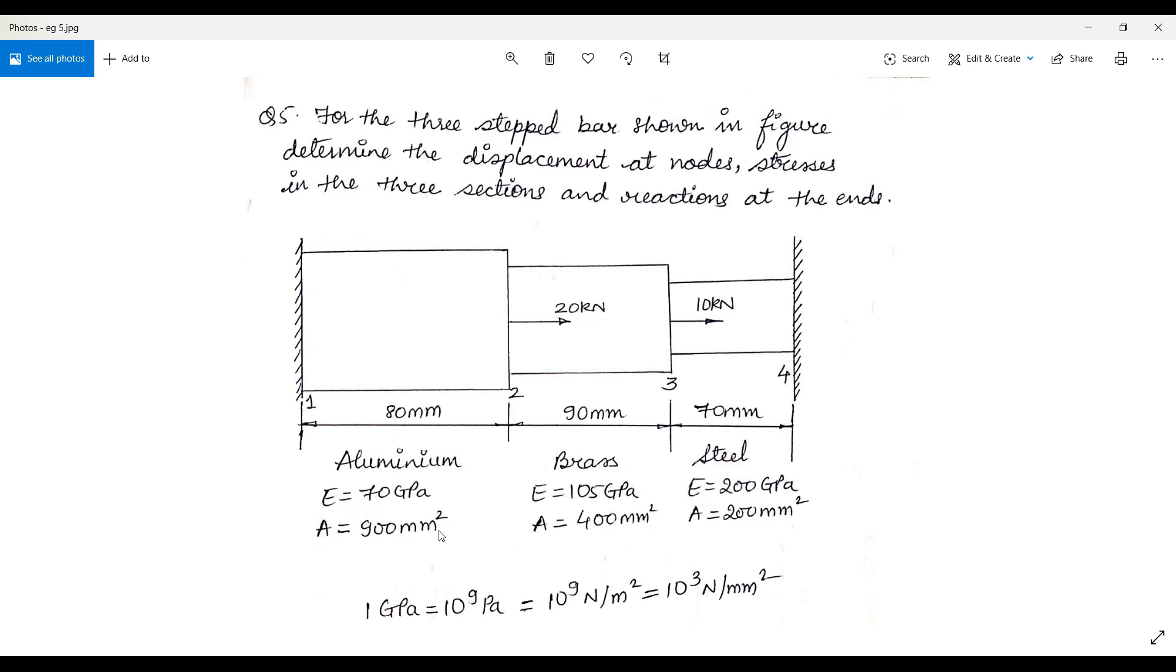For the second step bar, the length is given as 90 mm. Material is brass. Young's modulus is 105 GPa and area is 400 mm².